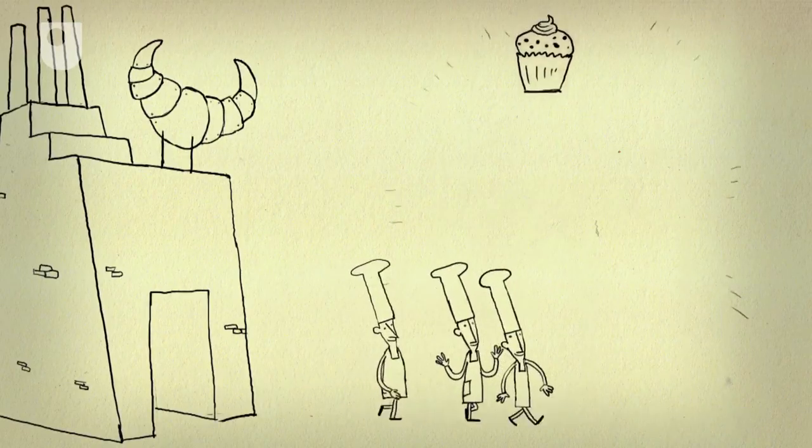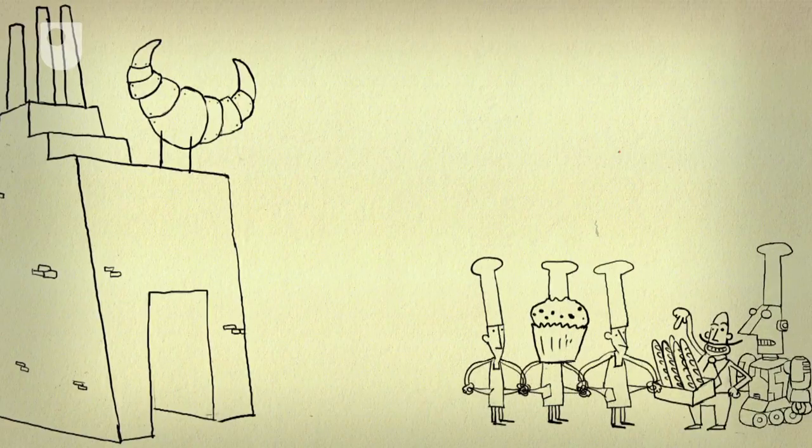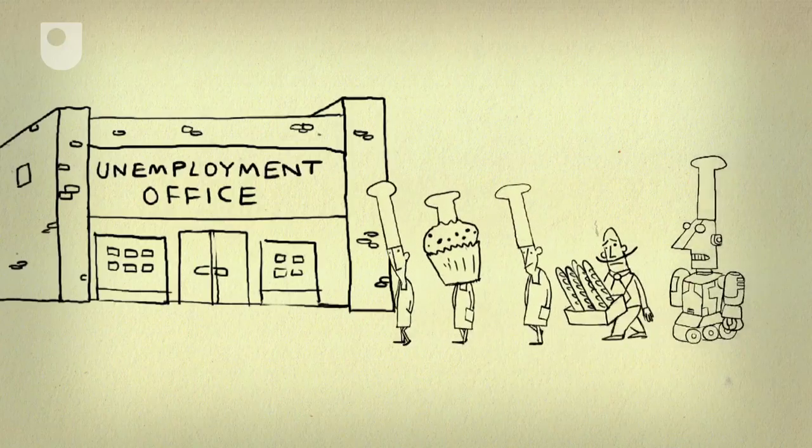Whereas if the government tightens its belt when people and businesses are doing the same, less is spent so unemployment gets even worse. That is the paradox of thrift.